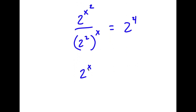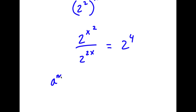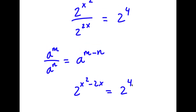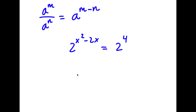This is the same as 2 to the power of x squared over 2 to the power of 2x equals 2 to the power of 4. Using the rule that a to the power of m over a to the power of n equals a to the power of m minus n, I get 2 to the power of x squared minus 2x equals 2 to the power of 4. Since the bases are equal, if a to the m equals a to the n, then m equals n.